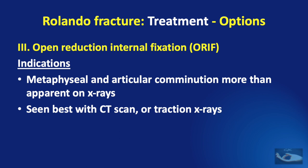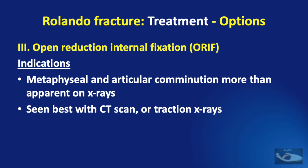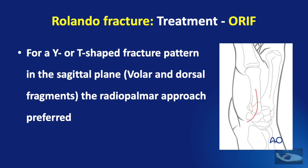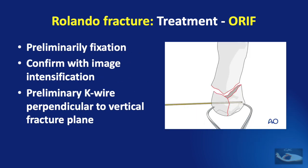These fractures are best assessed with CT scan or traction X-rays, and it is important to completely analyze the fracture before planning the treatment schedule. To perform open reduction and internal fixation with plate and screws, access to the fracture must first be established. For Y or T-shaped patterns in the frontal plane — with radial and ulnar fragments — a straight dorsal approach is preferred. If the fracture pattern is in the sagittal plane with volar and dorsal fragments, the radiopalmar approach is preferred. The morphology of the fracture must therefore be understood before planning the incision.